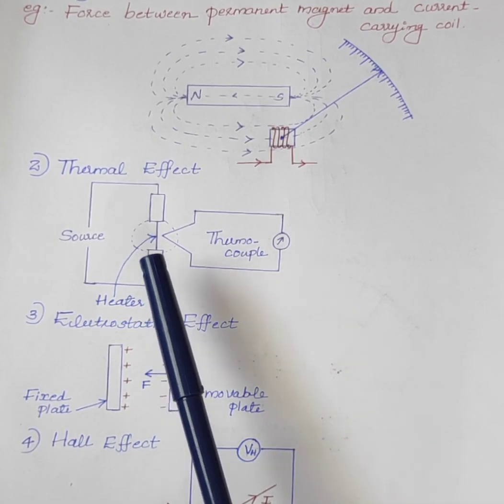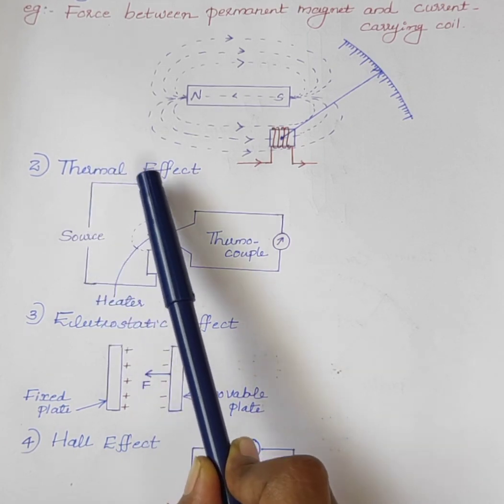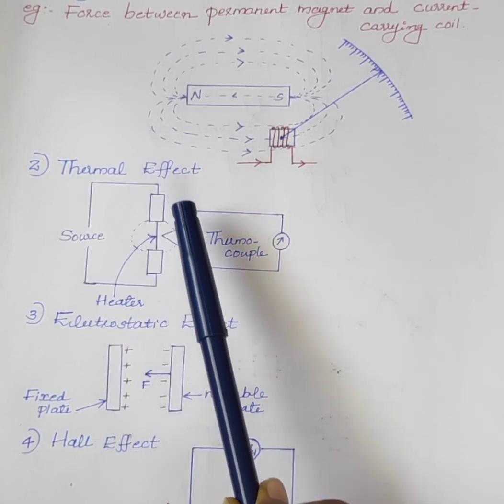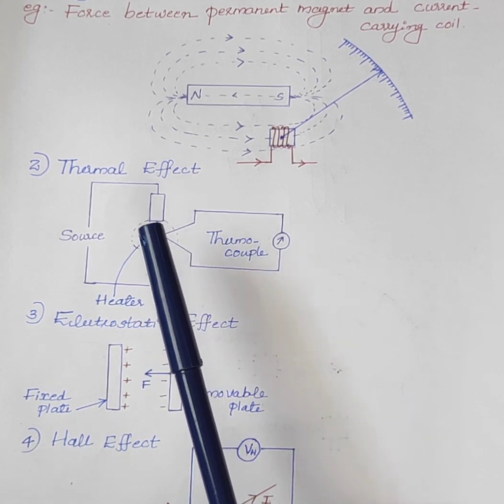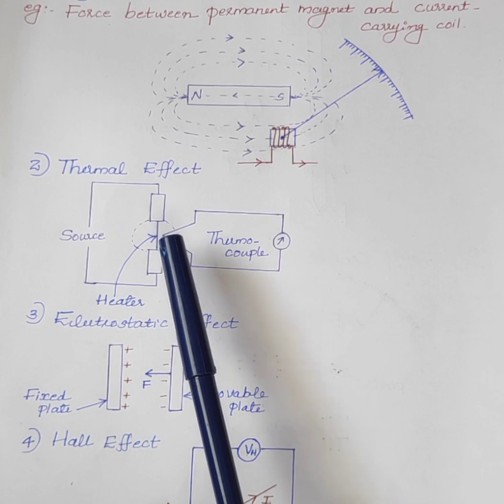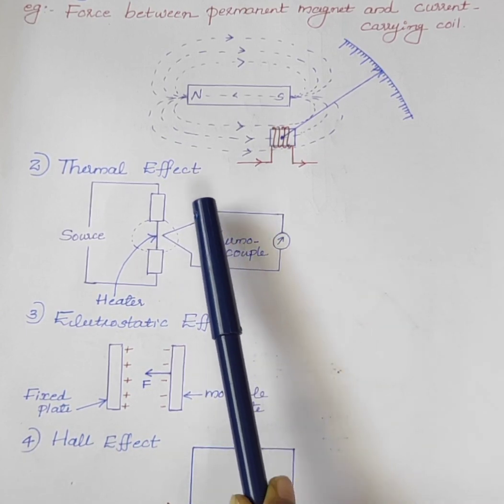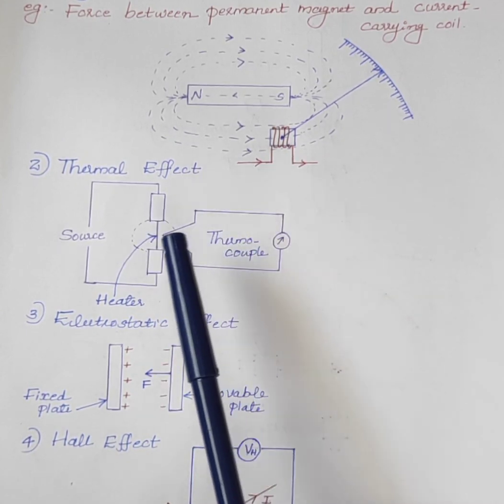Second one is the thermal effect. The current to be measured is passed through a small element known as a heater. The temperature rise is converted into an EMF by a thermocouple attached to the element.